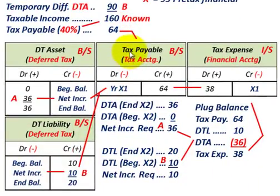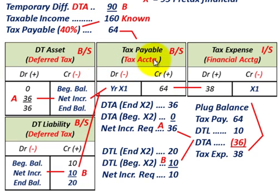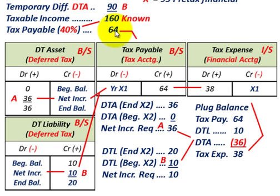Now let's look at how to record this. We'll start with tax payable, then the deferred tax asset and deferred tax liability. Based on the changes in those deferred items and the tax payable, we'll determine tax expense on the income statement. The 40% tax rate times taxable income of $160,000 gives us a tax payable of $64,000, so we credit tax payable for $64,000.